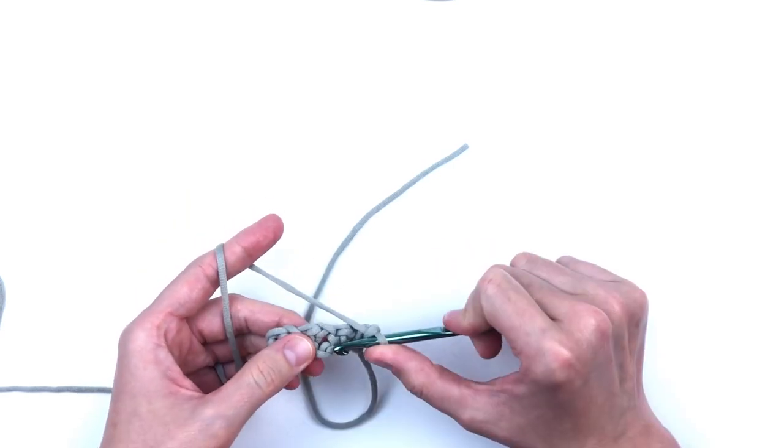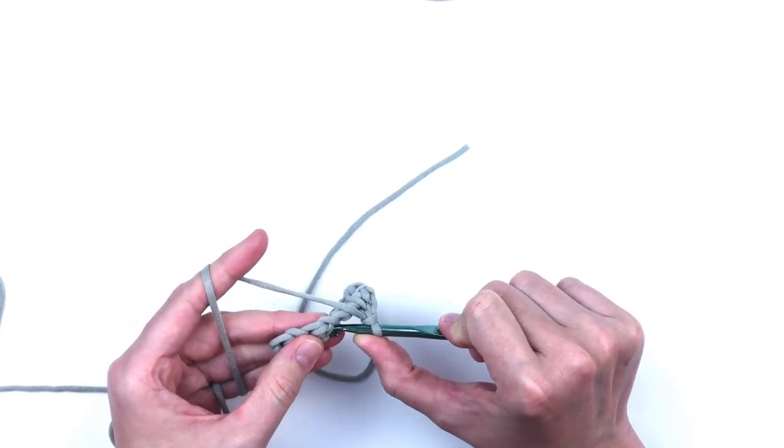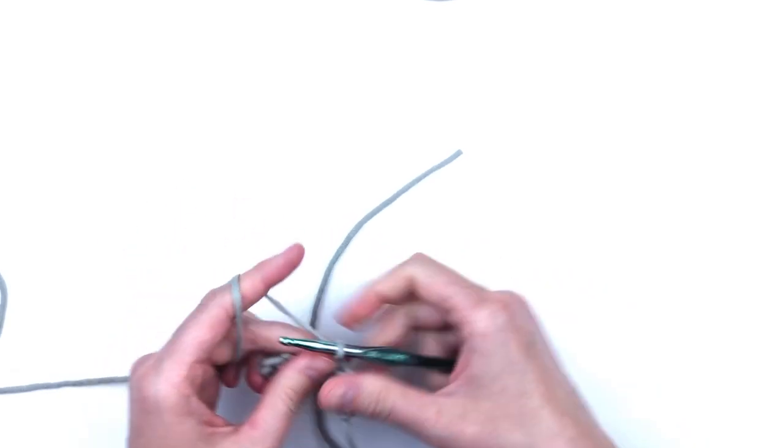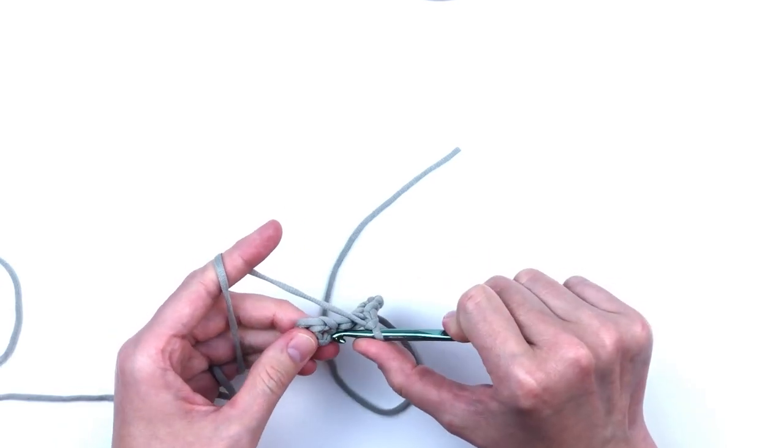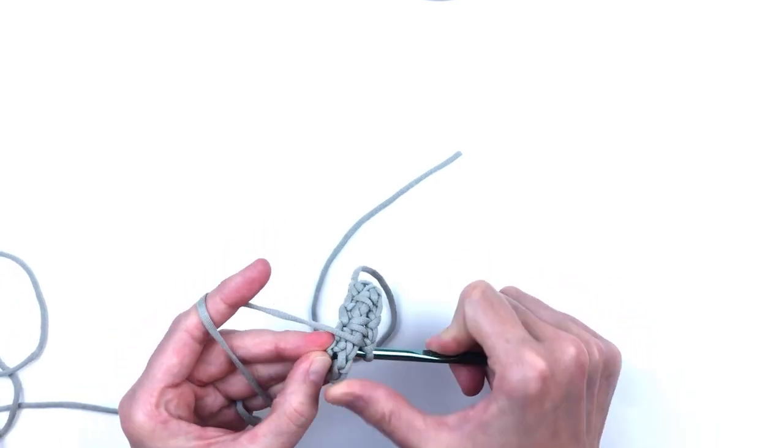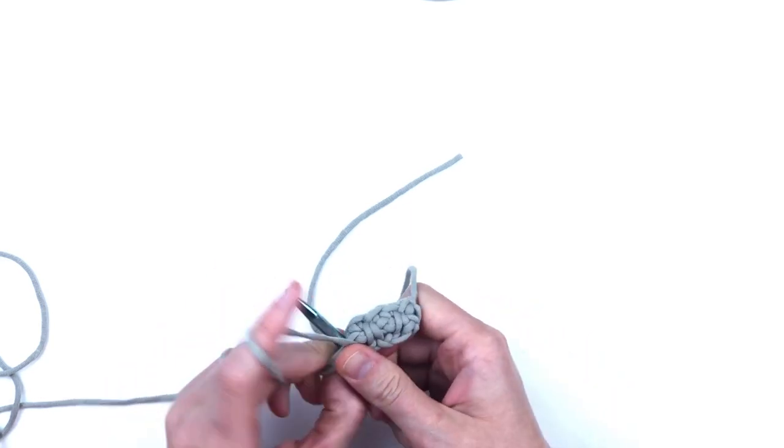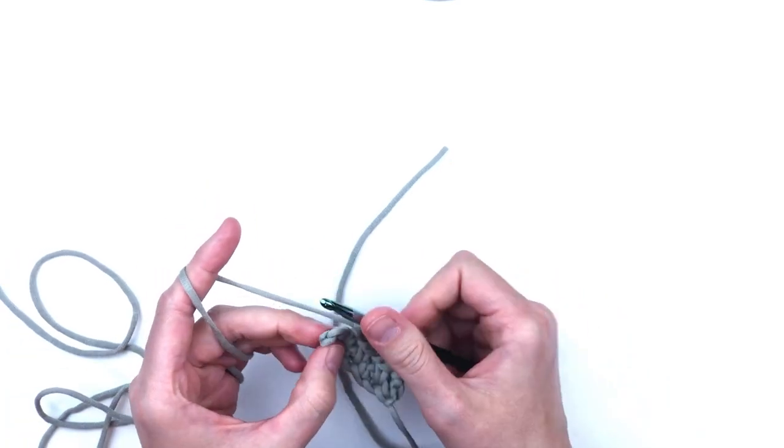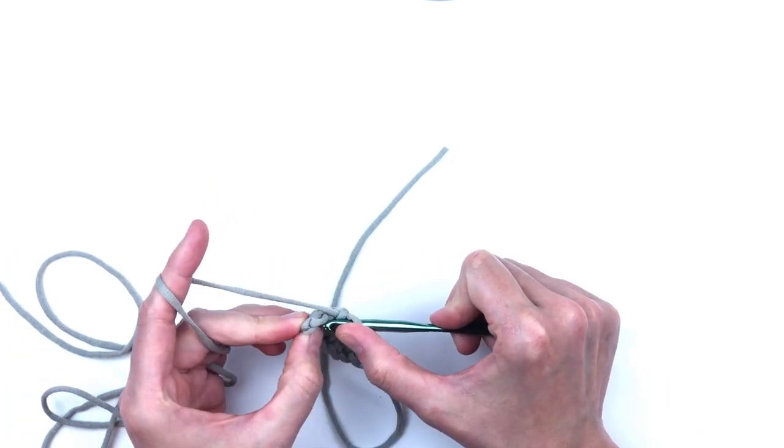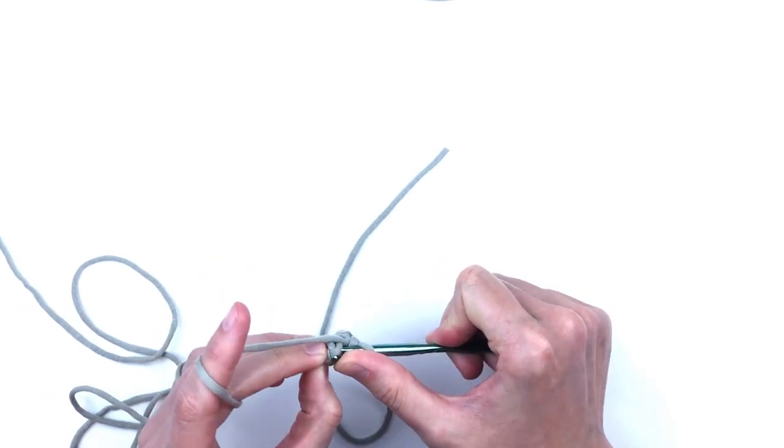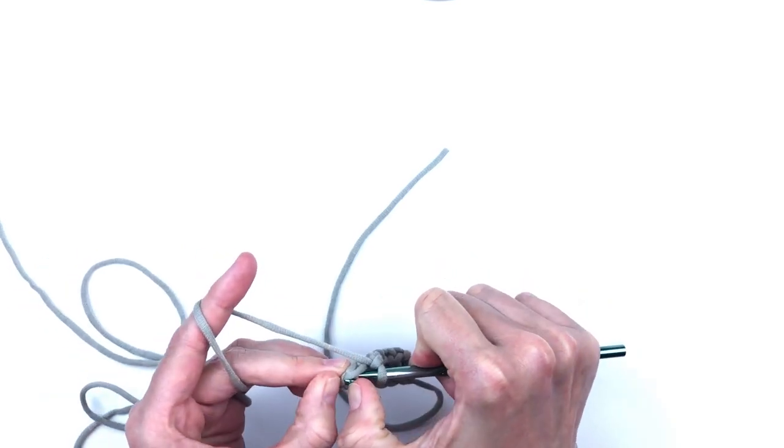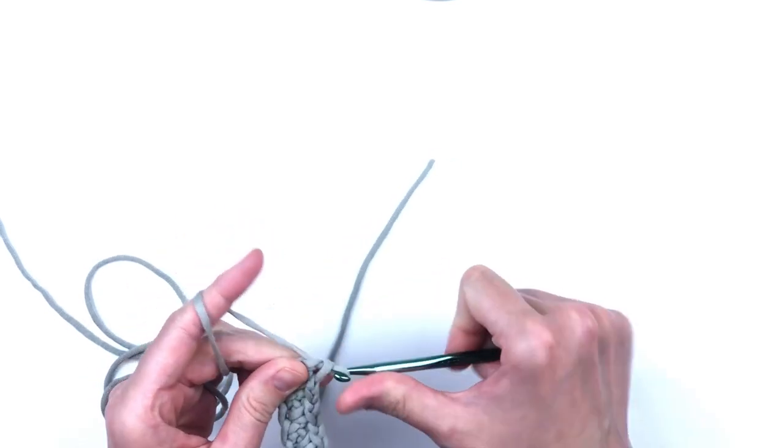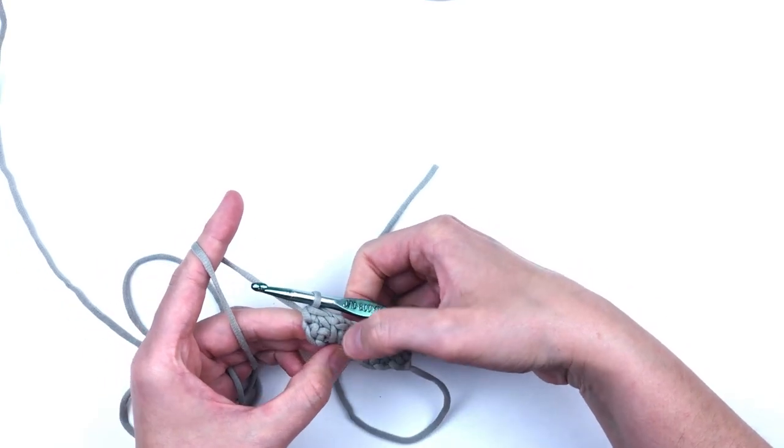So chain one, skip the next single crochet and make a single crochet down in the foundation chain that we skipped earlier. Chain one, skip the next single crochet and do the last drop stitch down in the foundation chain that we skipped. Chain one, skip the next single crochet and put a single crochet in the chain that we skipped at the very, very beginning. This will conclude row two. You should have four single crochets.